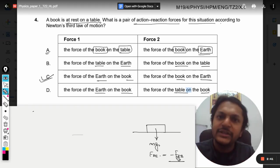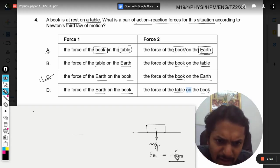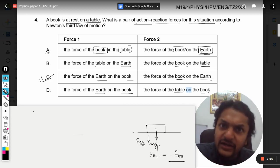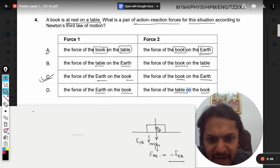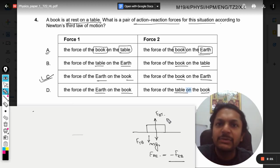So its reactionary pair will be minus Feb, the force on earth because of book. But then because of this force there will be a force on the table also, so I can say this is the force on table because of book. From here the table will be providing a reactionary force which will act on the book, so it will be force on the book by the table.